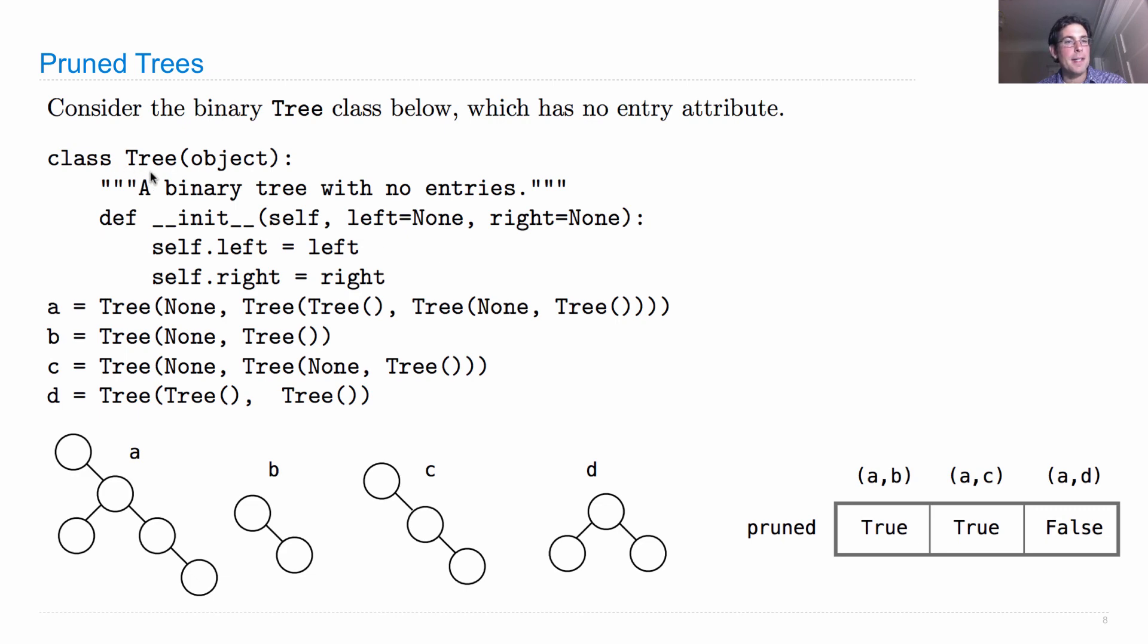What this class tree does is it has a base class of an object, which is the same as having no base class at all. A binary tree with no entry, a constructor which takes in the new tree that's being constructed, and then the left and the right tree, which default to none. If both are none, this is called a leaf, because there's no tree below it. And then it sets self.left to left and self.right to right.